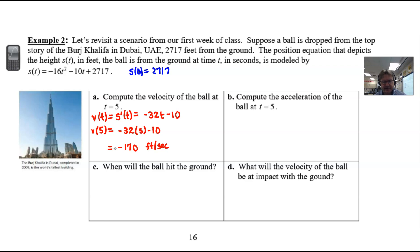For part B, it wants us to calculate the acceleration of the ball at time 5. We have to know that acceleration is simply the derivative of velocity, or the second derivative of position.